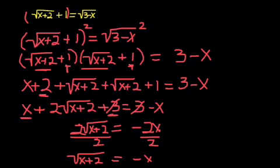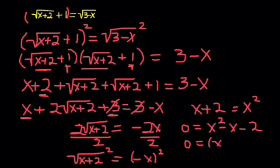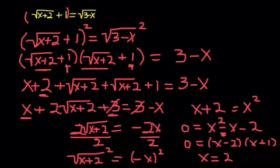Now I can square both sides again. Be careful — squaring negative x gives x squared, and the square root sign goes away on the right, leaving x plus 2. Now I have a quadratic to solve, so I get everything on the side with x squared: x squared minus x minus 2 equals 0. This one will factor — what multiplies to negative 2 and subtracts to 1? That's 2 and 1. The larger factor is negative, so I get (x minus 2)(x plus 1) equals 0, giving potential solutions x equals 2 and x equals negative 1.